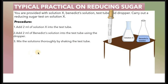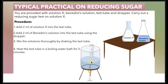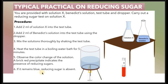Next, you will be provided with a water bath — water in a beaker that is boiling. Heat the test tube in a boiling water bath for five minutes. Then observe the color change of the solution. A brick red precipitate indicates the presence of reducing sugar. If the solution remains blue after heating, then reducing sugar is absent. That is how you record your result.